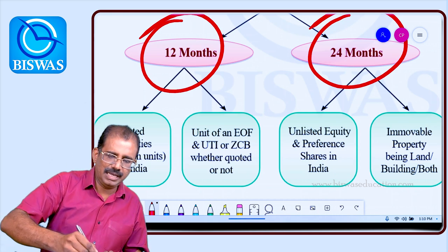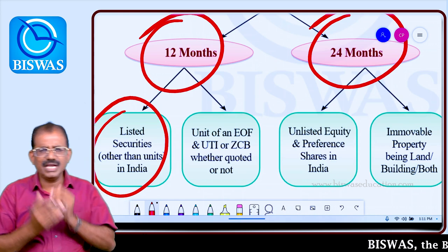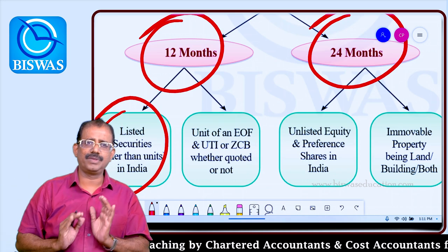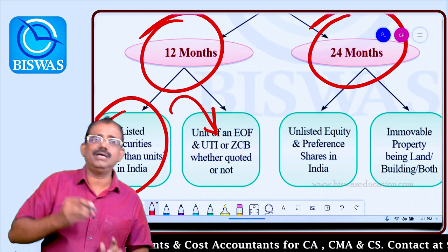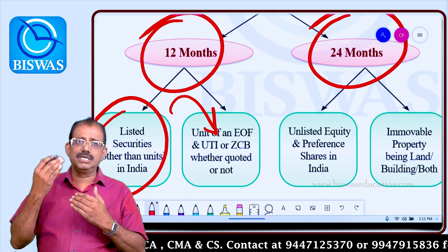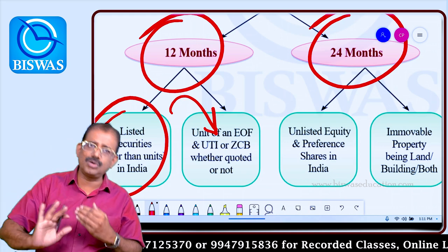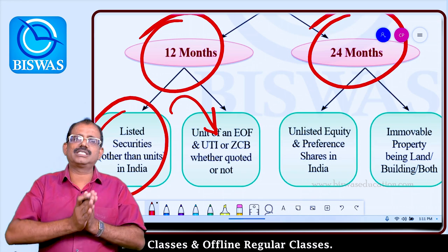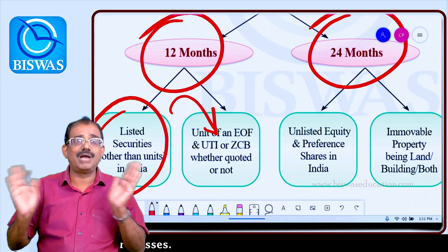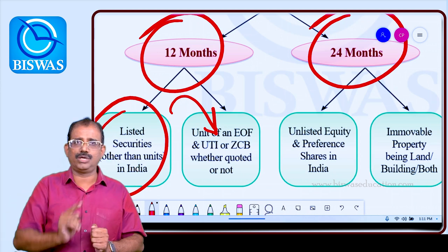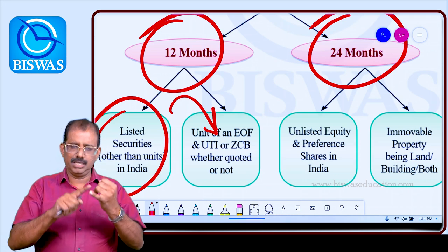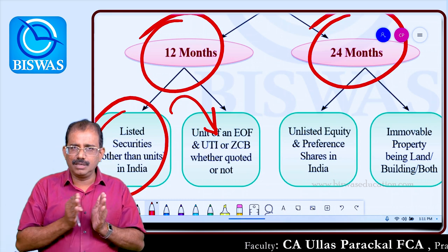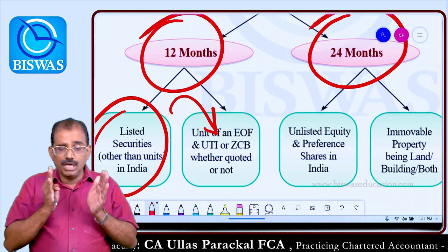Let's compare it to listed securities. What are listed securities? Securities — that means equities, preference shares, debentures, etc. Units are treated separately. For listed securities other than units, the holding period is 12 months. If held for more than 12 months, it is long-term. If held for not more than 12 months, it is short-term. For example, a listed equity share purchased in January 2023 and sold in December 2023 — held for about 12 months — is a long-term capital asset. Clear?